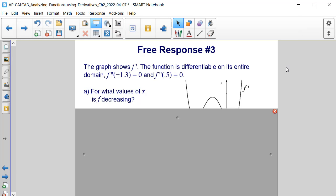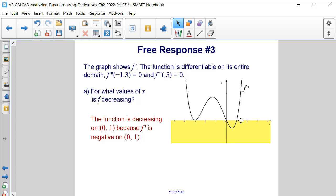Let's start with the first question. For what values of x is f decreasing? This occurs when the derivative, when its graph, is negative. If we look, the section of the derivative that is below the x axis is on the interval from 0 to 1. Therefore, the original function f will be decreasing on that interval.